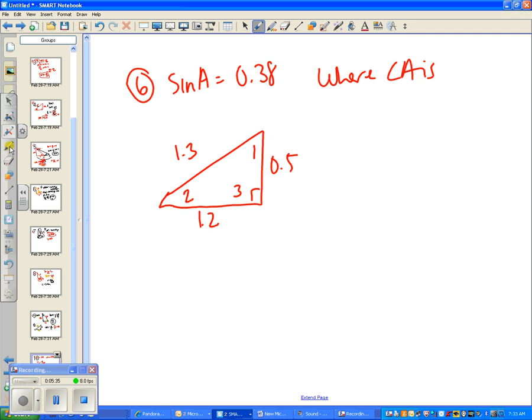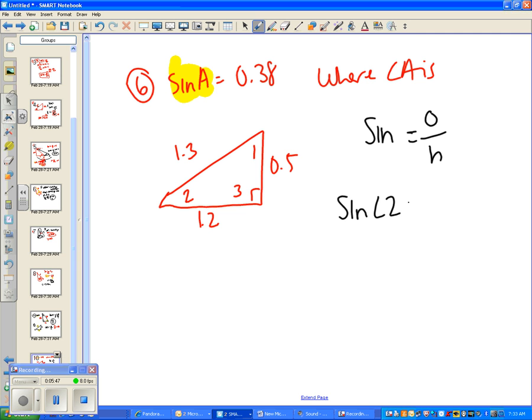You're going to use the fact that they give us sine to compare opposite. Sine is the same thing as opposite over hypotenuse. So let's say we wanted to find the sine of angle 2, well that would be 0.5 because that's opposite over the hypotenuse, which is 1.3. If you put this into your calculator, do you get 0.38? Yes, you do. And since they have the same ratio, that means that angle 2 equals angle A.